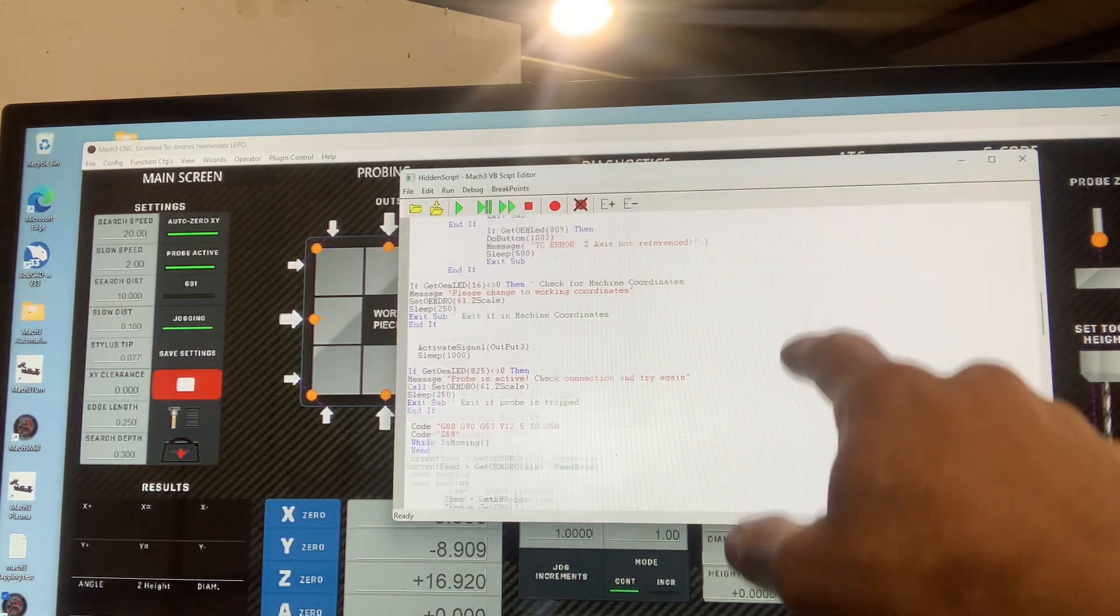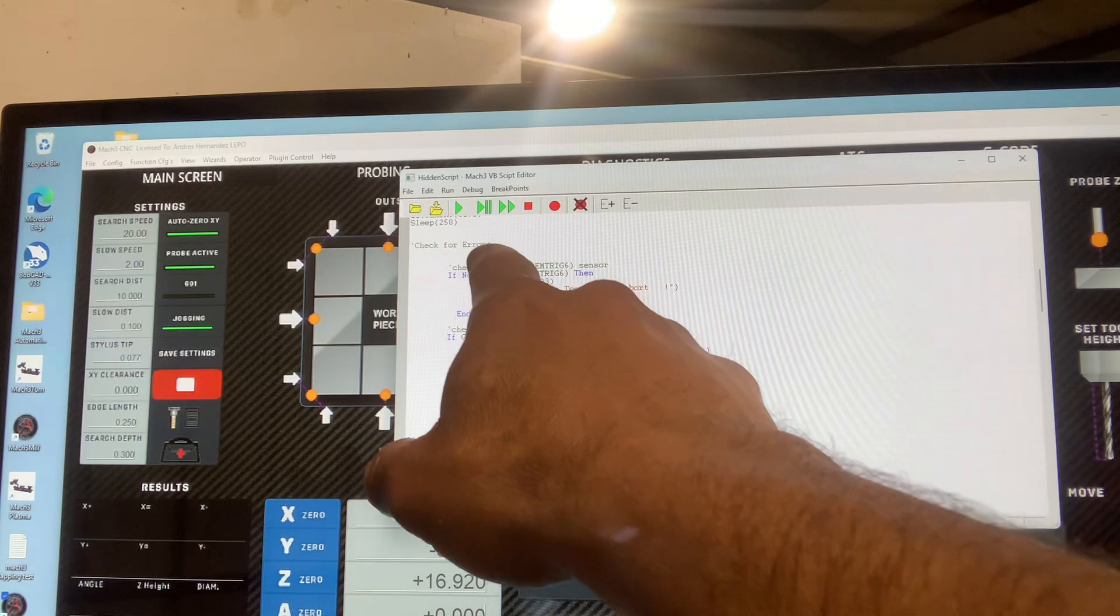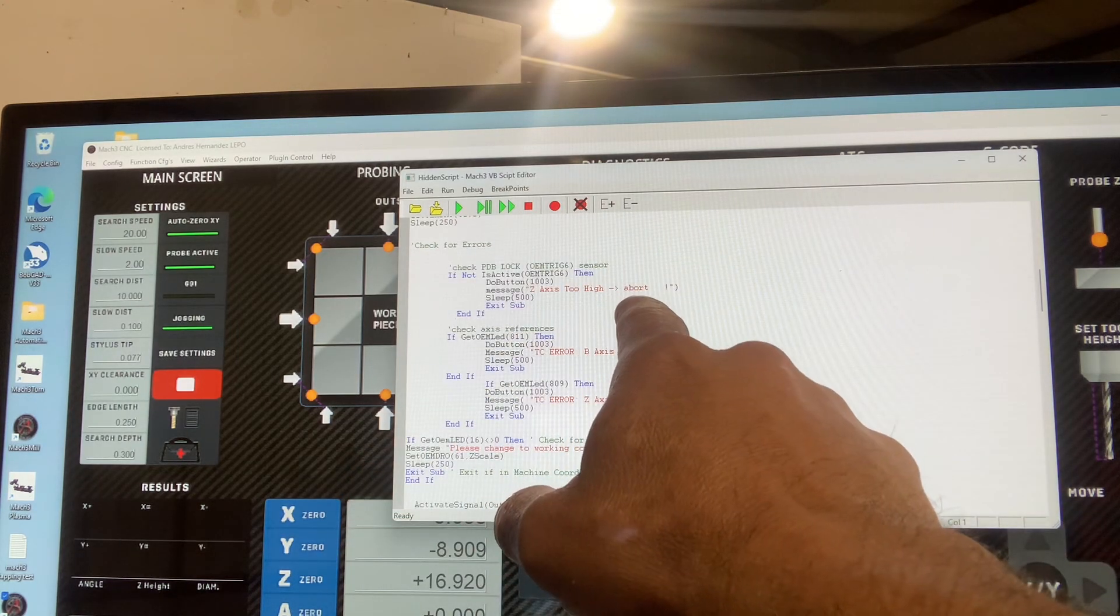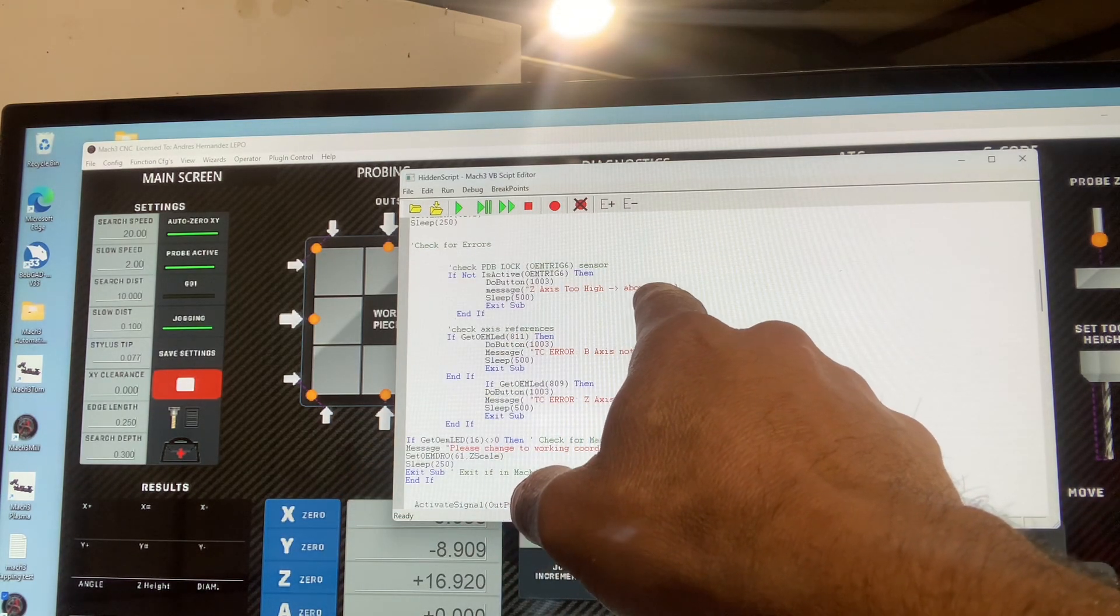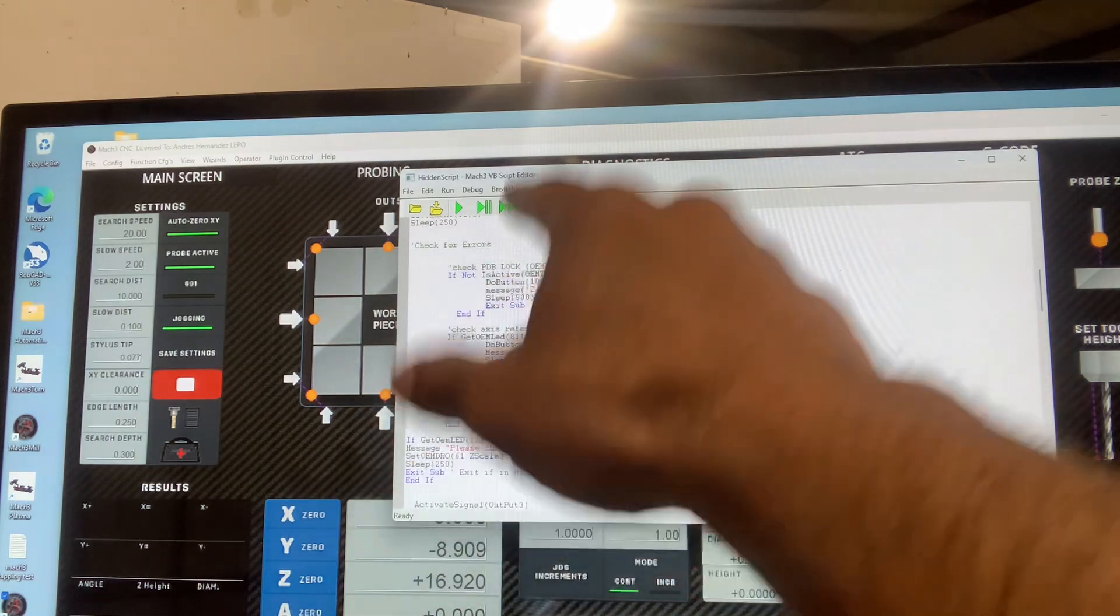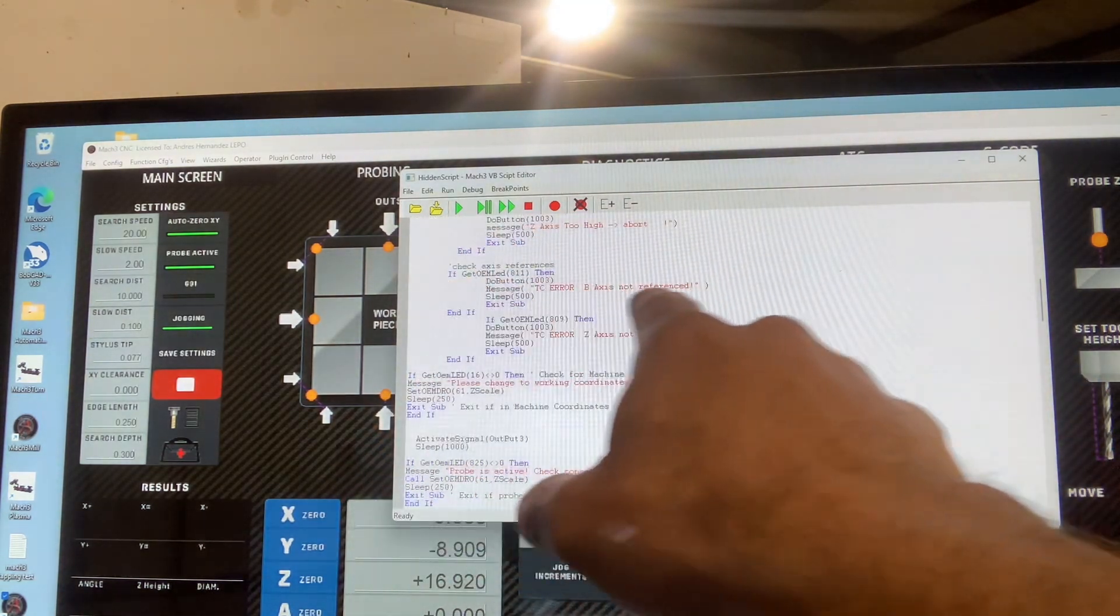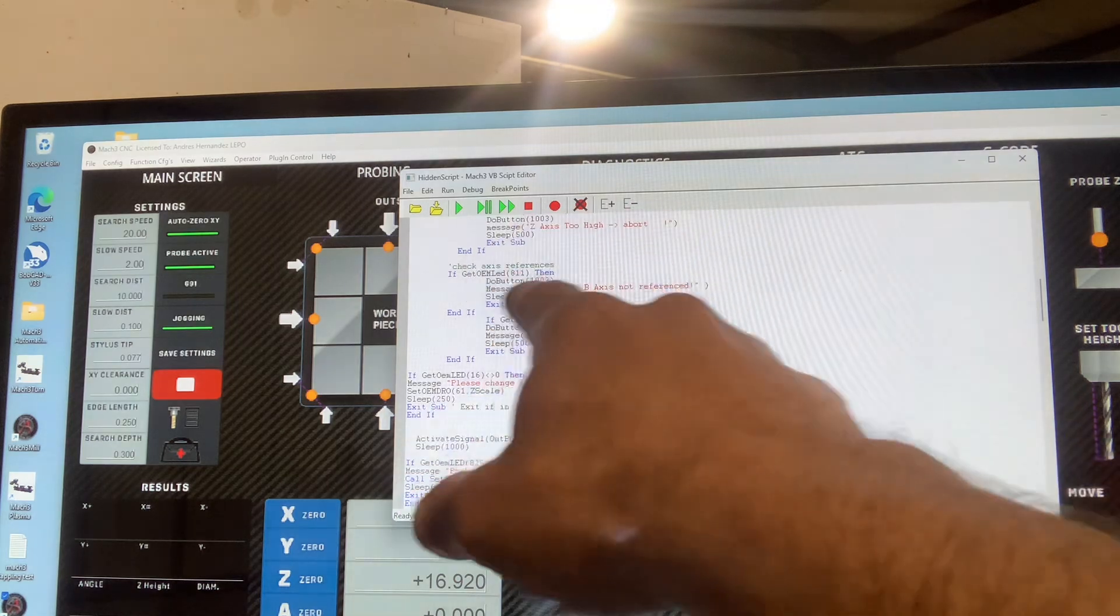I'm going to go through it again. Make sure I got a tool on the spindle, make sure I'm lower than the carousel, make sure my B-axis is referenced, which is my carousel.